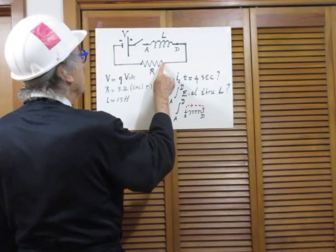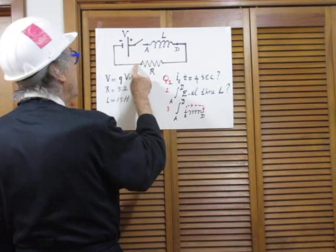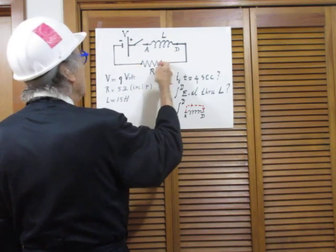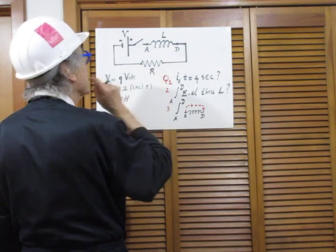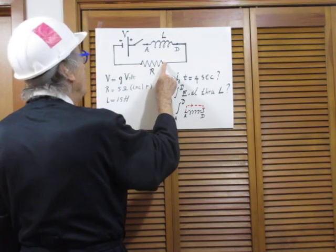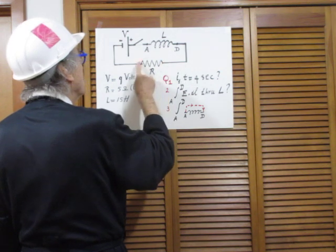If you went from this point here of the resistor to that point there of the resistor, the integral of E dot dL through the wires of the resistor would be the voltage difference between this point and that point.